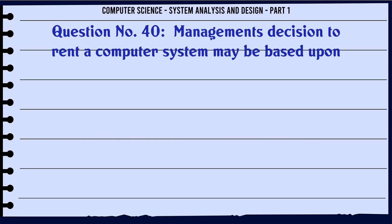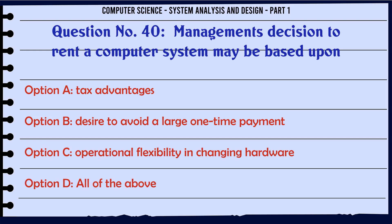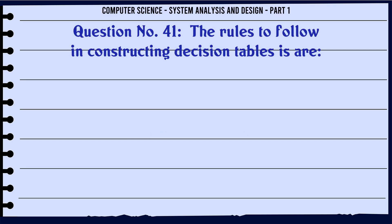Management's decision to rent a computer system may be based upon: A. Tax advantages. B. Desire to avoid a large one-time payment. C. Operational flexibility in changing hardware. D. All of the above. The correct answer is: All of the above.